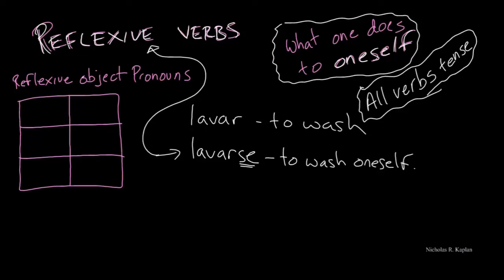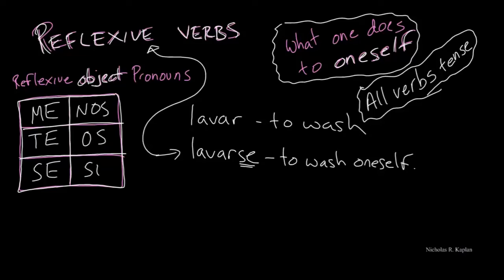What we need to know first are our reflexive object pronouns. If we go back to our box of six, when we are conjugating these verbs, we're going to need to use me, te, se, nos, os, se.